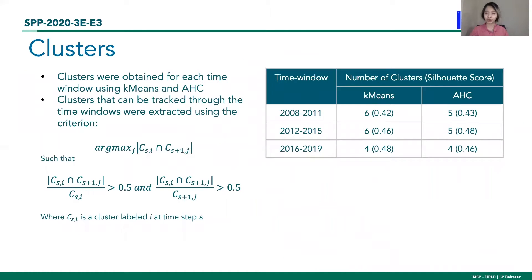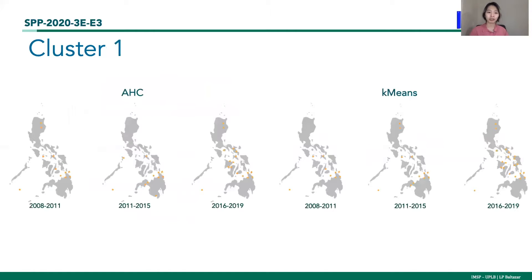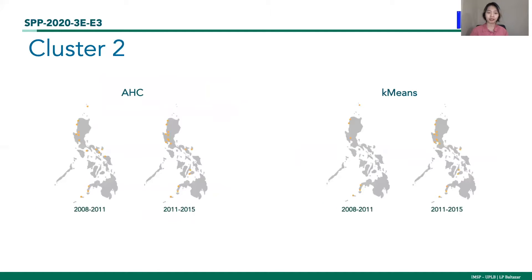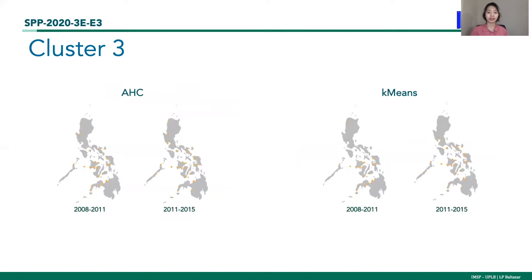The generated feature space was used as input in the clustering methods and it resulted to four to six clusters in different time window. Here is the equation for the continuity criterion. To identify the trackable clusters, clusters at each time window that share at least 50% were considered as trackable. This ensures continuity in the time windows. Here are the clusters generated, which are trackable, cluster 1, cluster 2, and cluster 3.